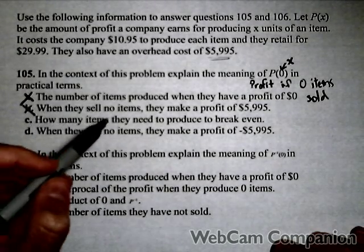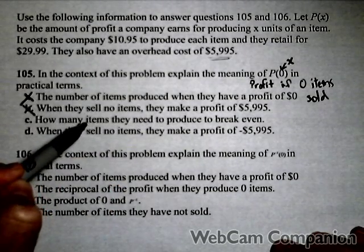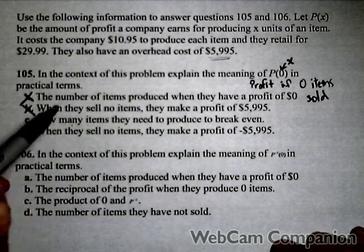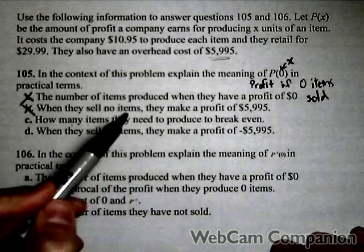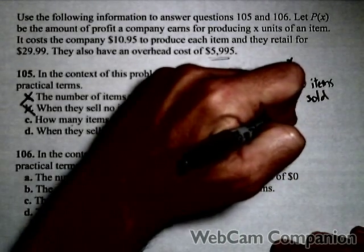How many items they need to produce to break even? We've already said they're producing no items, so that doesn't make any sense. Also, the break even would be where the profit is 0, so that would be P(x) = 0 for this one.